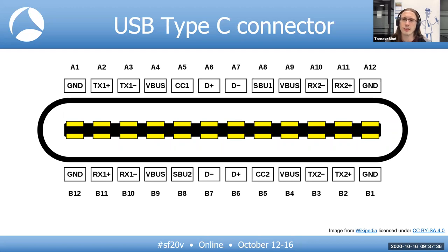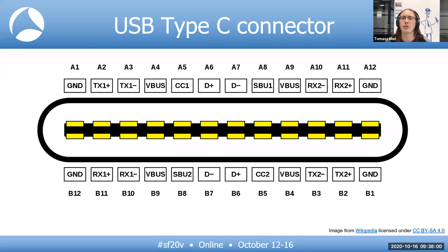Another alternate mode is DisplayPort. A USB-capable device can agree with the host — for example, TX and RX being used for DisplayPort while TX2 and RX2 are used for SuperSpeed USB communication. The SBU1 and SBU2 pins, which are for sideband use, are used only in alternate modes. For example, DisplayPort alternate mode uses SBU pins as auxiliary channels.